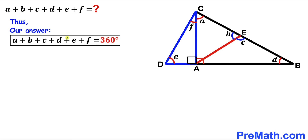Adding the right-hand sides gives us 360 degrees. So the sum of all these angles — angle A plus B plus C plus D plus E plus F — turns out to be equal to 360 degrees. That's our final answer. Thanks for watching and please don't forget to subscribe to my channel for more exciting videos.